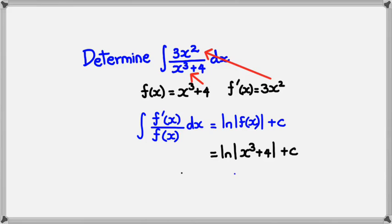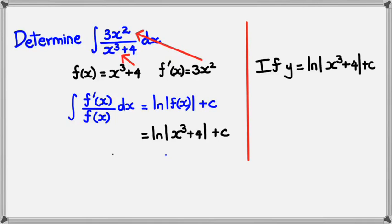Just to check, if I differentiate ln of x cubed plus 4 plus c, I should end up with my original answer. So that's what I'm going to do very quickly. I just want to check that when I differentiate ln of x cubed plus 4, I'm going to get the same as what I started off with.